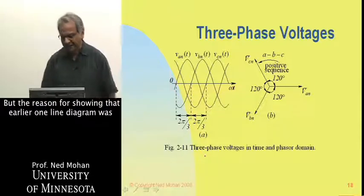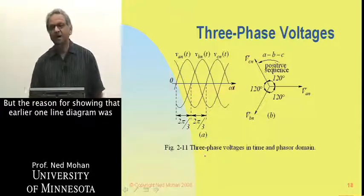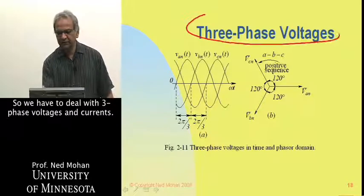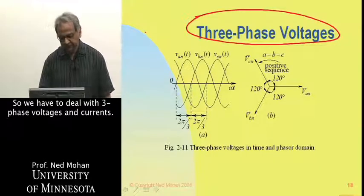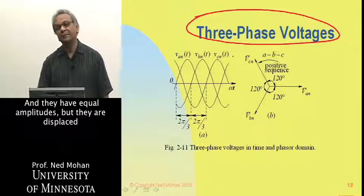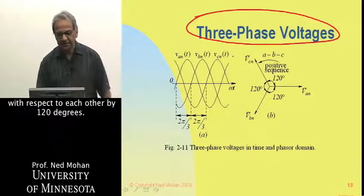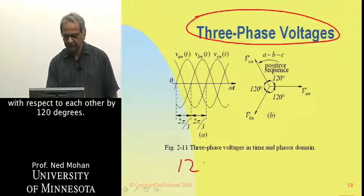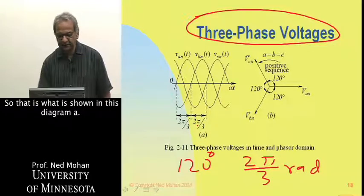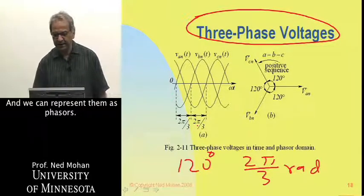The reason for showing that earlier one-line diagram was that all these subsystems are three-phase. So we have to deal with three-phase voltages and currents. We may have these three voltages, VA, VB, and VC, and they have equal amplitudes but are displaced with respect to each other by 120 degrees, or 2π/3 radians. That is what is shown in diagram A, and we can represent them as phasors.